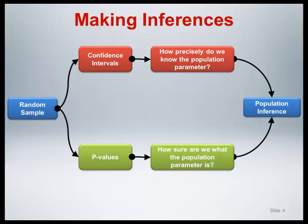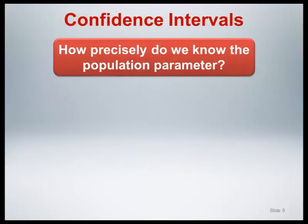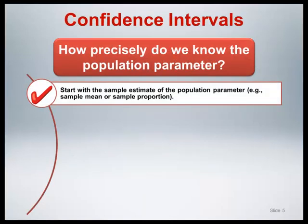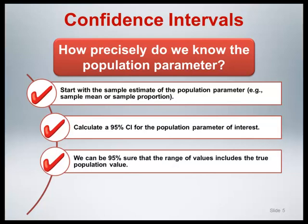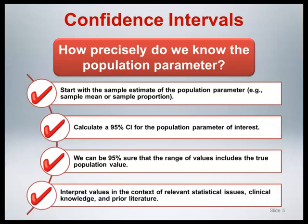Let's look more closely at the steps involved in each approach. For the calculation of a confidence interval, we start with the sample estimate of the population parameter — for example, the sample mean or sample proportion. We then calculate a 95% confidence interval for the population parameter of interest. We know that we can be 95% sure that the range of values includes the true population value. We then interpret the values in this interval in the context of relevant statistical issues, clinical knowledge, and prior literature, focusing on the width of the interval and the clinical importance of the values contained in it.